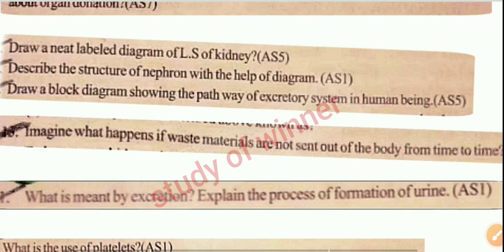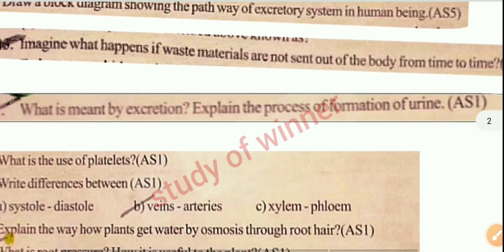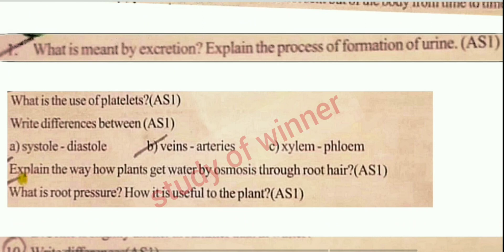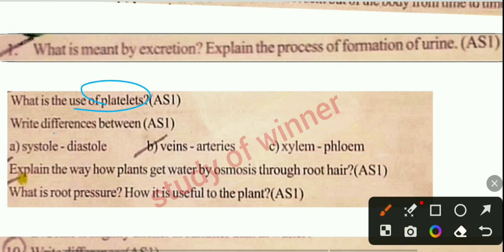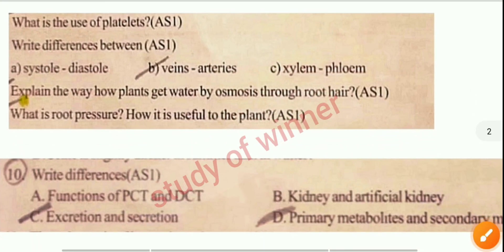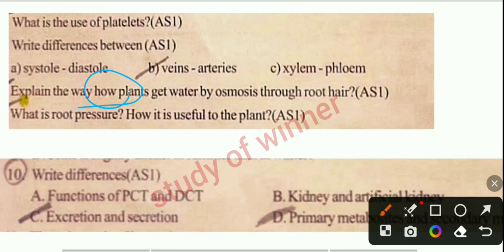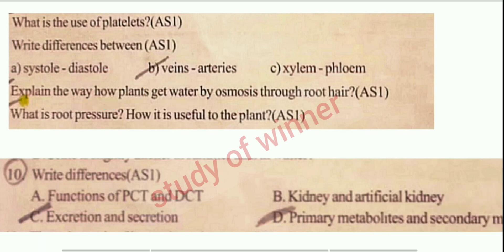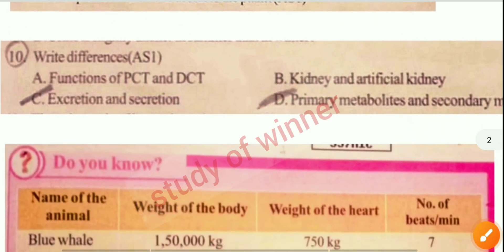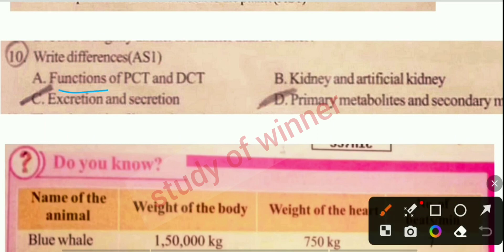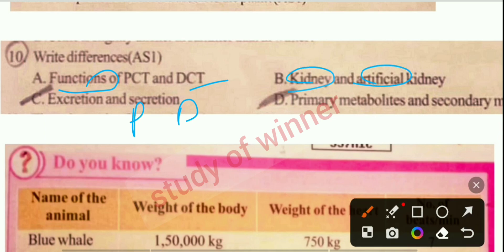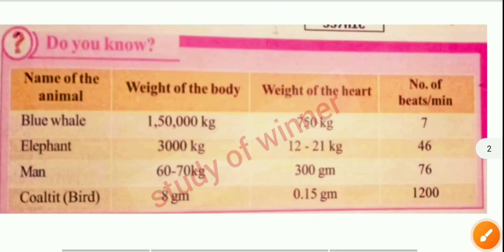Next you can see: use of platelets and difference between A, B, and C. Next: explain the way how plants get water through roots. Next: difference between the function of PCT and DCT. Next: kidney and artificial kidney. All these questions you can see here.